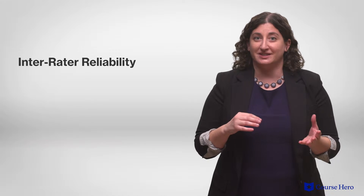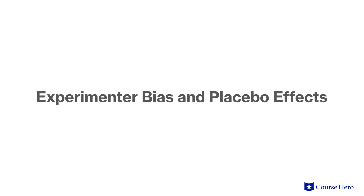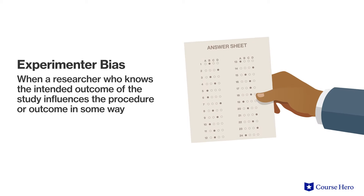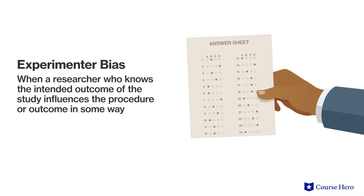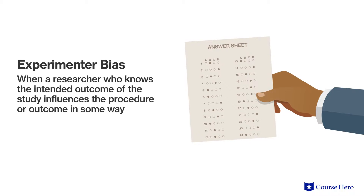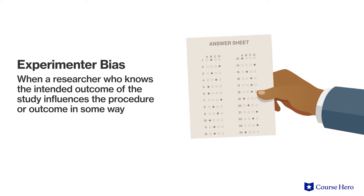If two raters grade a personality assessment and come up with totally different results, we would say that that test lacks inter-rater reliability, because there is a lack of consistency between different raters' scores. Research can also be biased by the way a study is conducted. Experimental bias occurs when a researcher who knows the intended outcome of the study influences the procedure or outcome in some way, either intentionally or unintentionally.